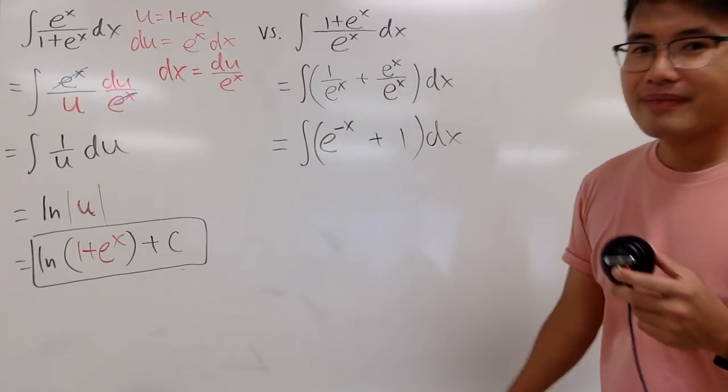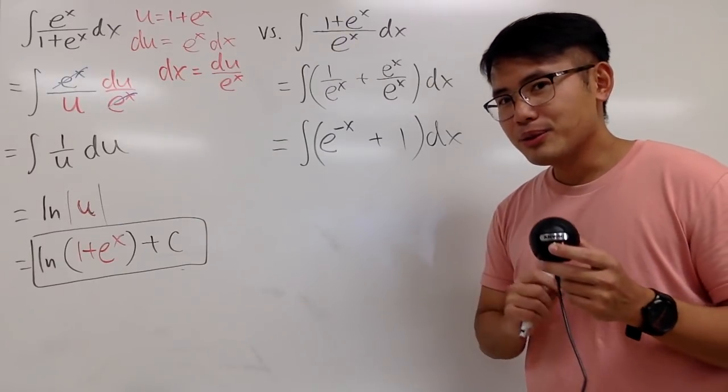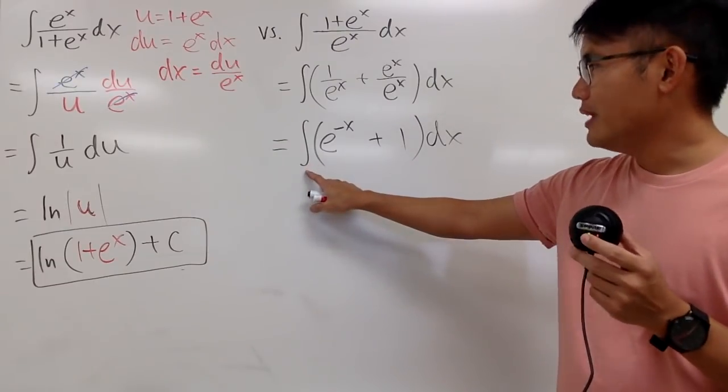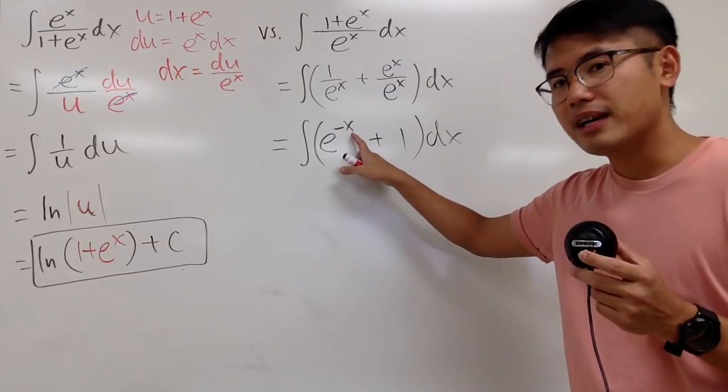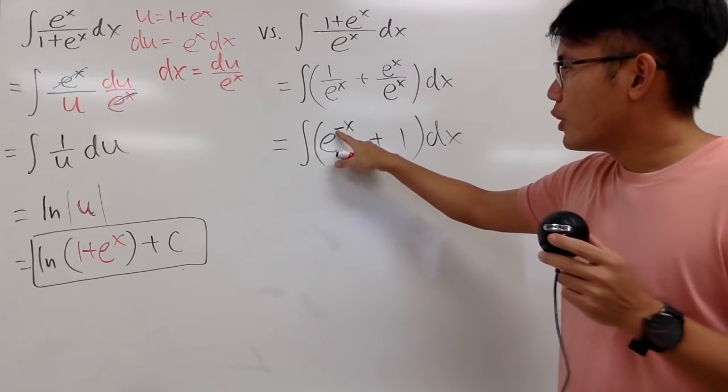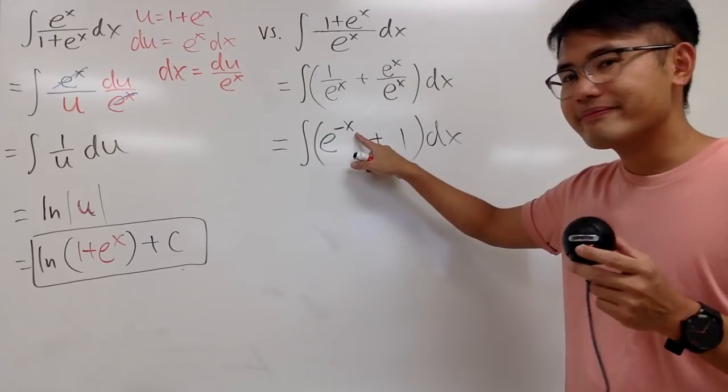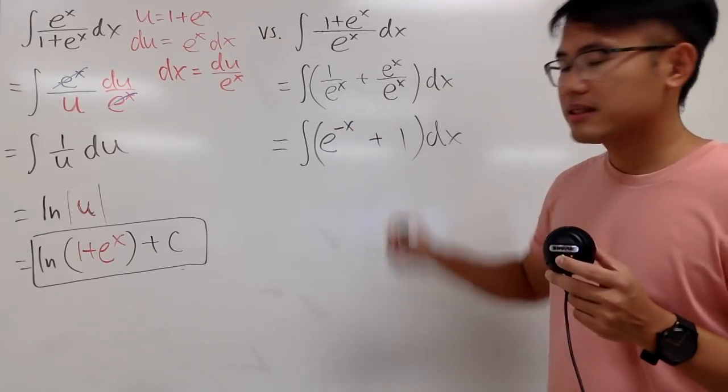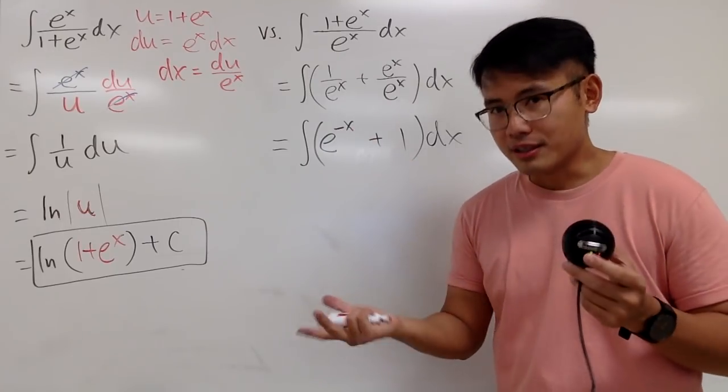And this right here, it's pretty much it. Okay, let's try to do this in our head. I'm going to integrate e^(-x). Remember, we pay attention to the derivative of the inside function. The derivative of negative x is just negative 1, which is just a constant, right?